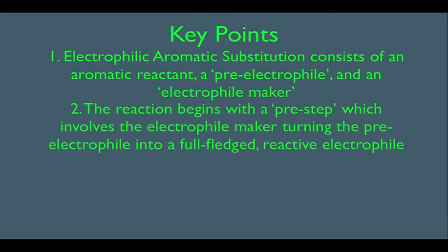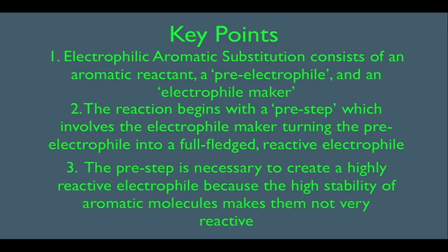Number two, the reaction begins with a pre-step, which involves the electrophile maker turning the pre-electrophile into a full-fledged reactive electrophile. Number three, the pre-step is necessary to create a highly reactive electrophile, because the high stability of aromatic molecules makes them not very reactive. That's why we have to prep up an electrophile and make it more reactive.